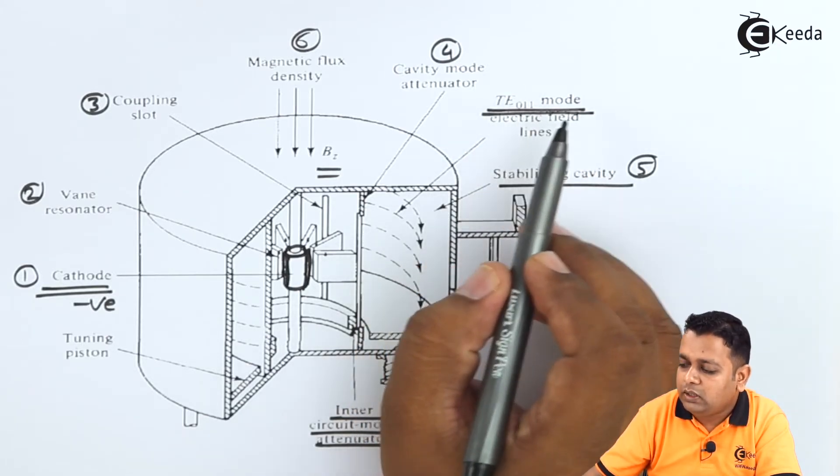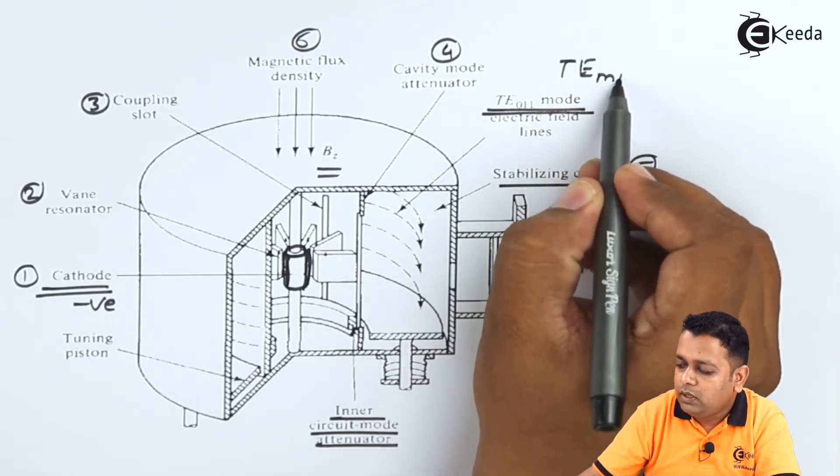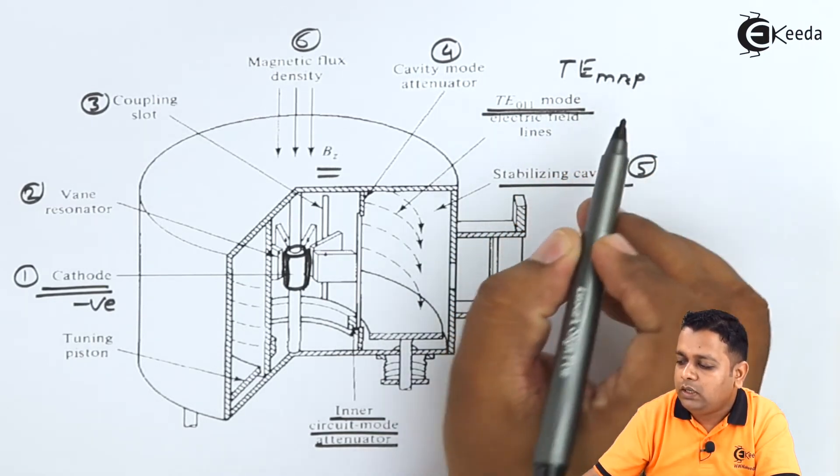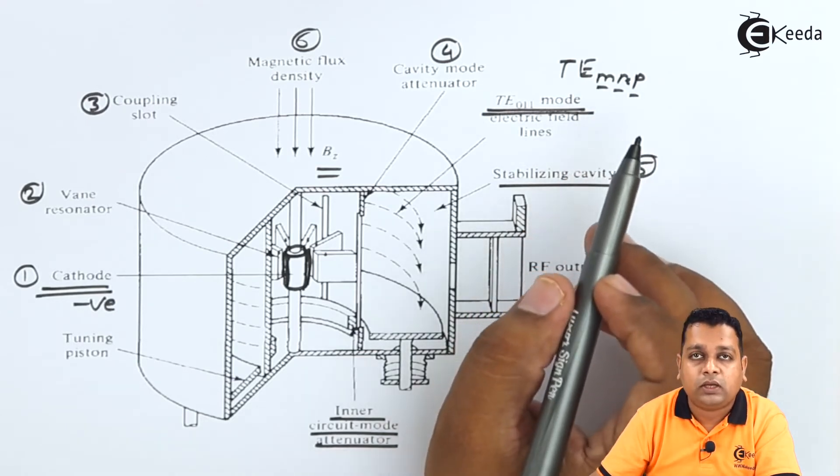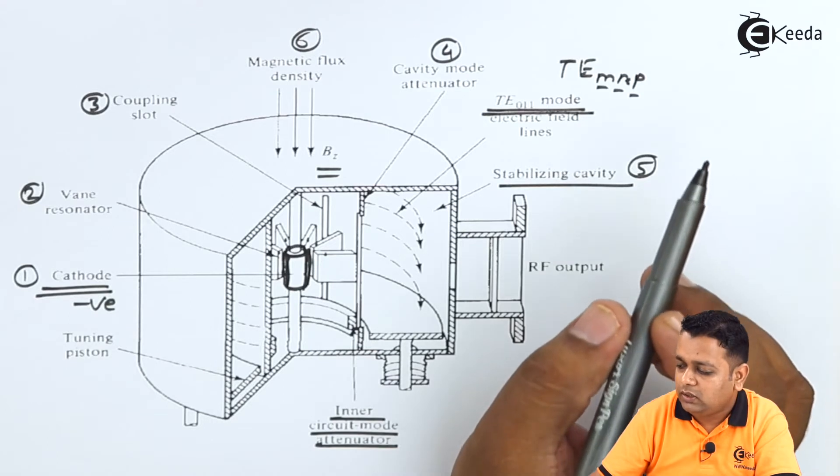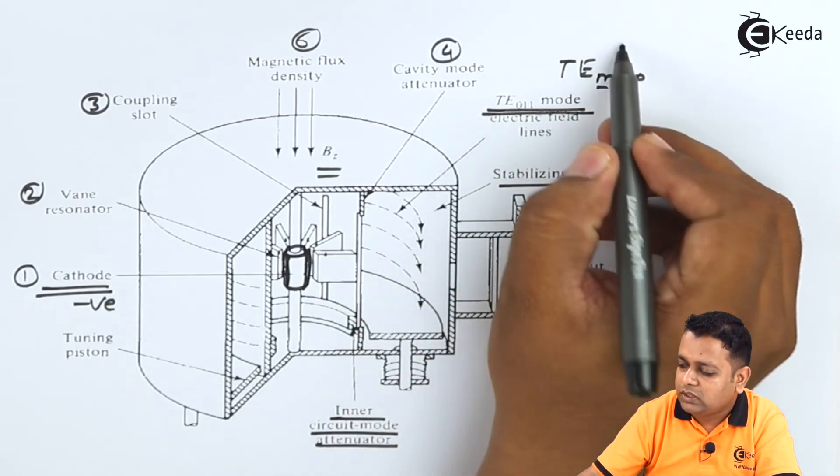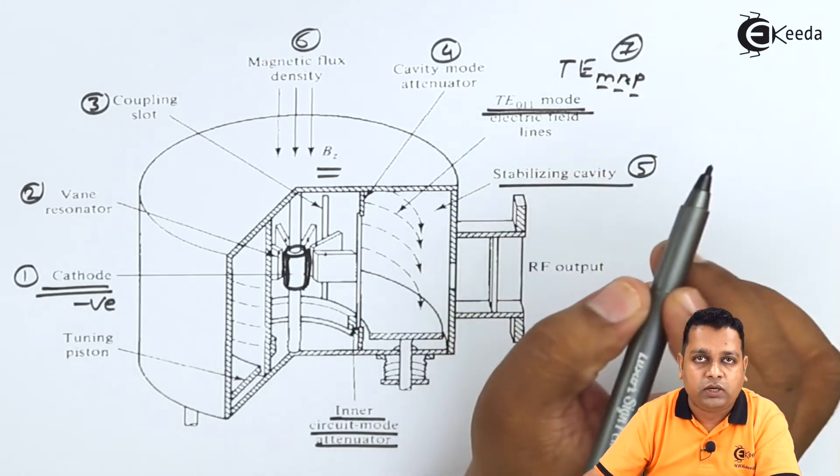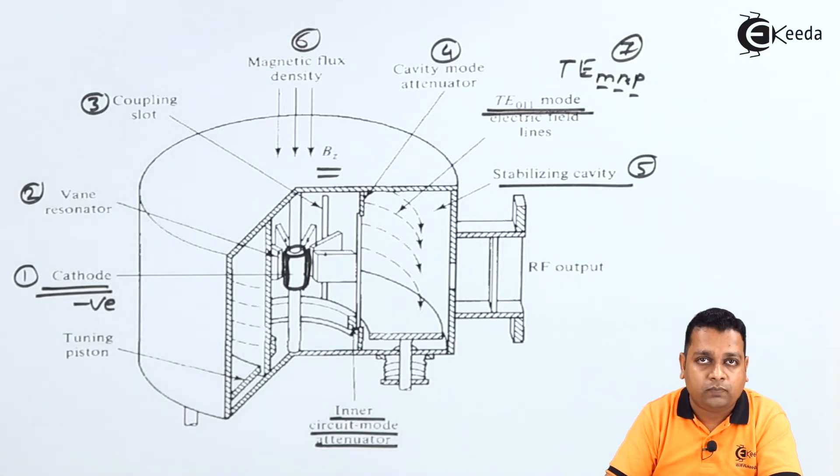Generally for the electric field, here we have TE. So M, N and P will be the three integers that we use whenever the cavity resonators are studied here. So the values are 0, 1, 1 here. So this can be regarded as the next point here.